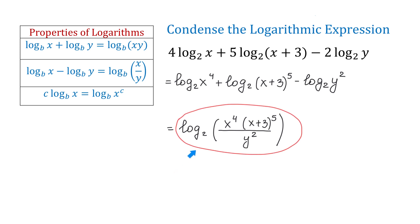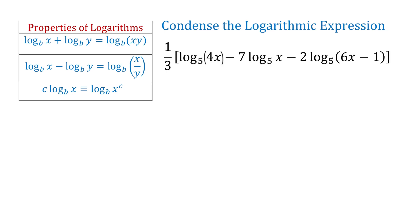Here we have the first logarithmic expression condensed. Now let's see one more example. In this expression, the fraction 1 over 3 is multiplied by log base 5 of 4x minus 7 log base 5 of x minus 2 log base 5 of 6x minus 1. We could start by distributing this number, or we can start by condensing the logarithms inside the brackets.